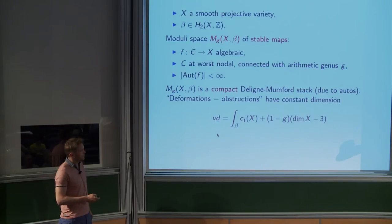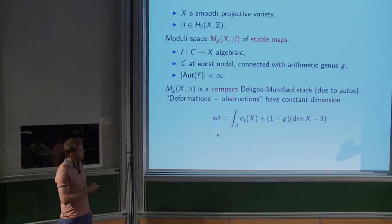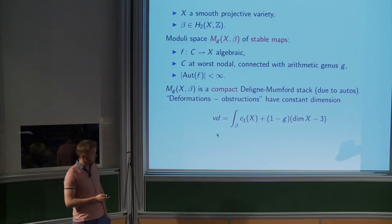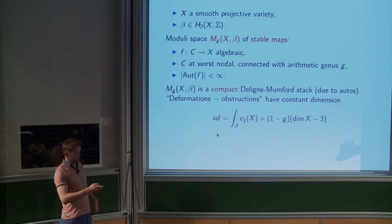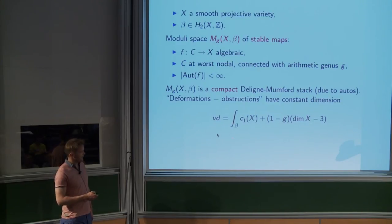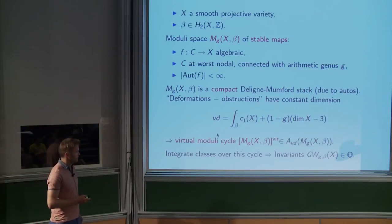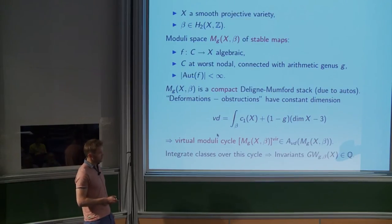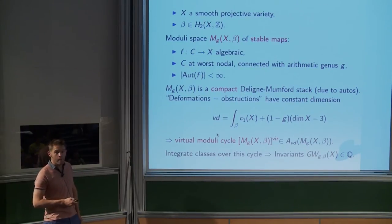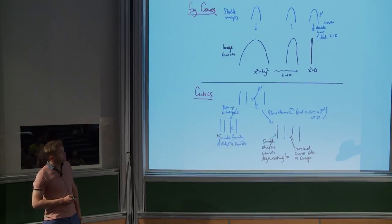The space of deformations minus the space of obstructions has a constant dimension given by a Riemann-Roch formula — this is called the virtual dimension. The moduli space in general has too high a dimension, but you can get a cycle of actual virtual dimension, done by Lee-Tian and Behrend-Fantechi, proposed by Maxime. This virtual moduli cycle replaces the moduli space: you integrate against it and get Gromov-Witten invariants, which are rational numbers because of the finite automorphisms.